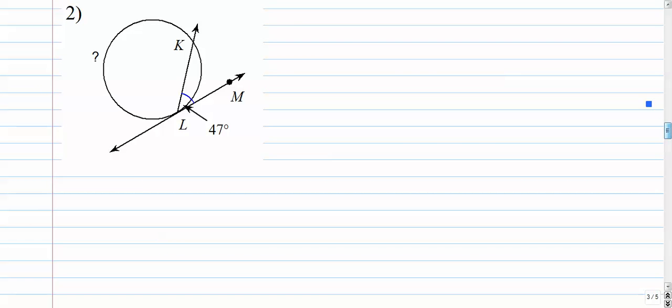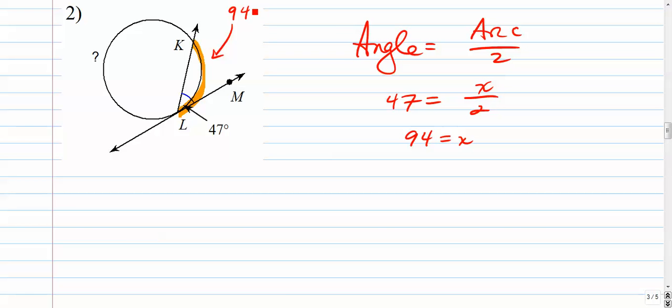Number 2. The angle is half as big as the arc. So this arc right here would simply be 47 times 2. Since the angle is the arc over 2. So the arc is 94 degrees.